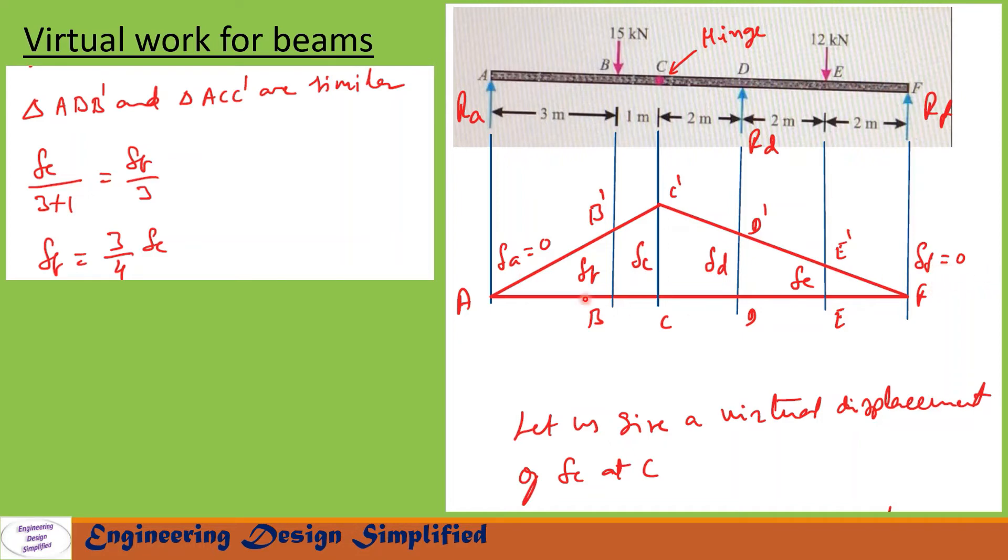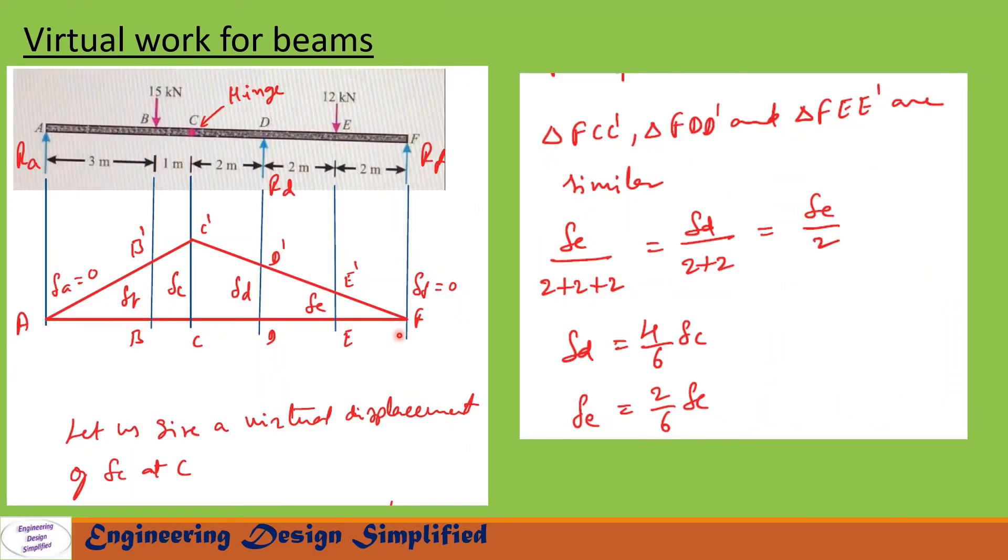Now from these three similar triangles FEE', FDD', and FCC', we can write: ΔC/(2+2+2) = ΔD/(2+2)